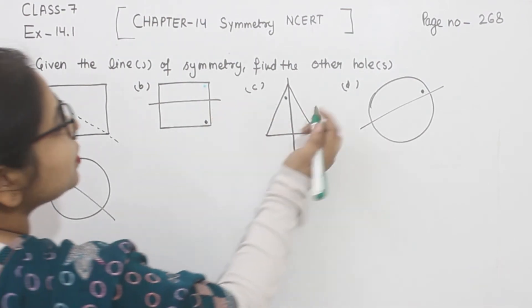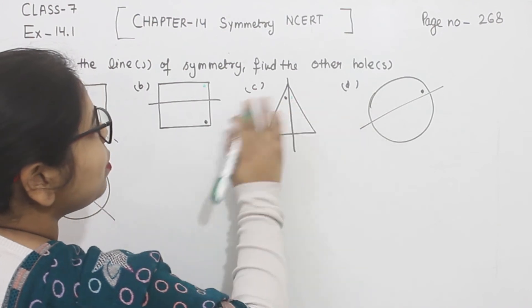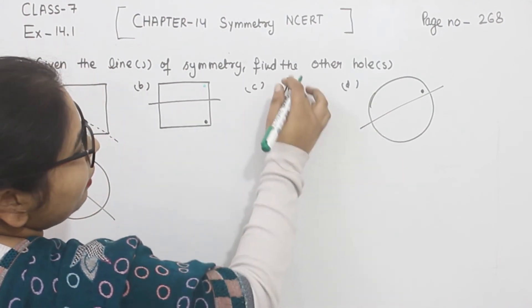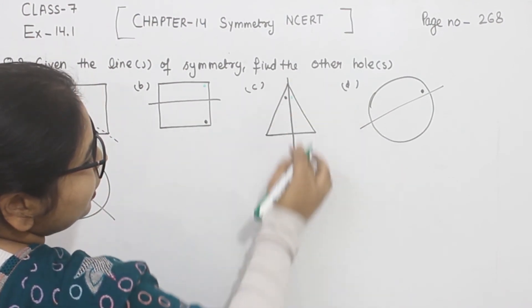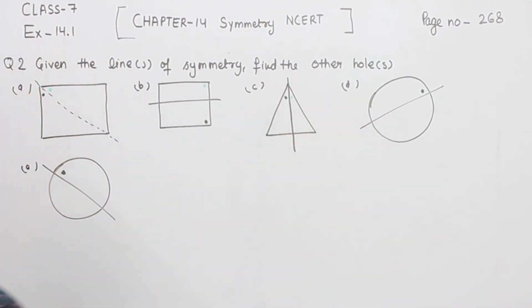Now comes part C. In this one, the hole will be here. So if we draw the line of symmetry here, both the holes come on the surface of each other. This is part C.